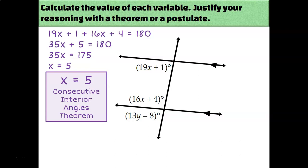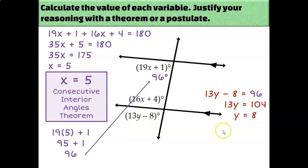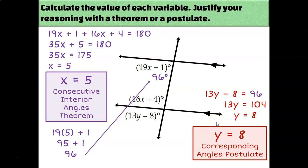Now that I know x is 5, I need to plug it into one of the expressions to find the actual angle measure. 19 times 5 plus 1 equals 96 degrees. This angle measuring 96 degrees and the angle labeled 13y minus 8 are corresponding angles, which means they're congruent. So I set 13y minus 8 equal to 96, add 8, divide by 13, and find that y equals 8 because of the corresponding angles postulate.